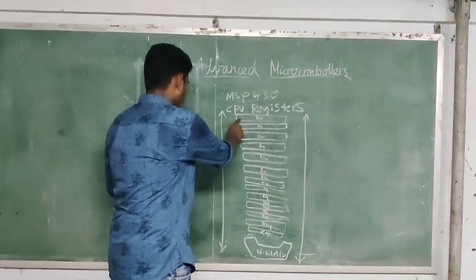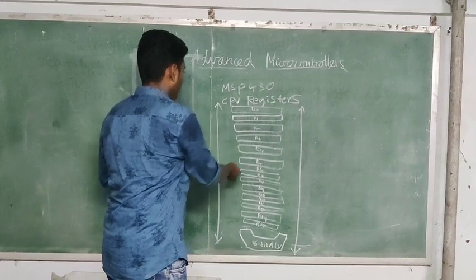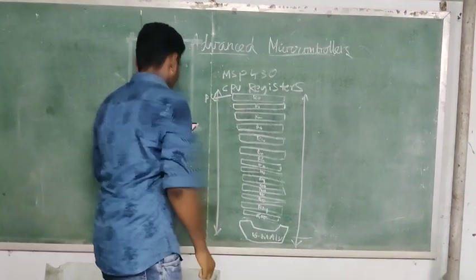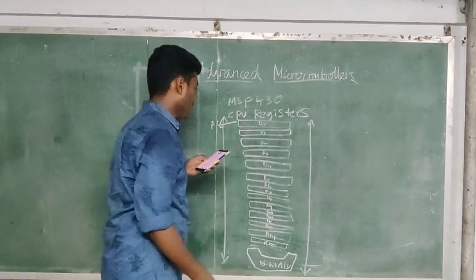Register R0 is served for program counter PC. It is named as program counter PC. Whereas register R1 serves as the stack pointer.